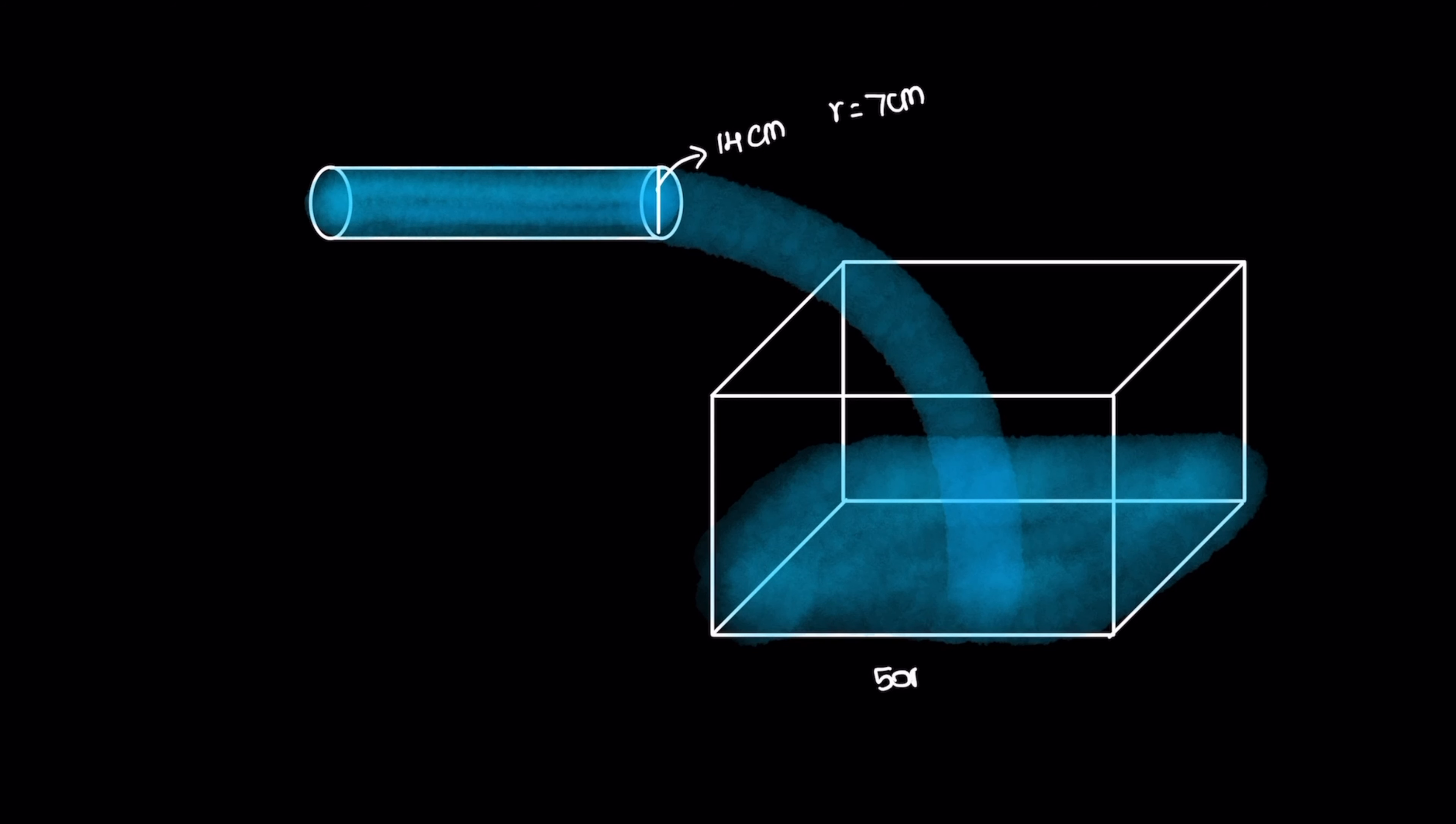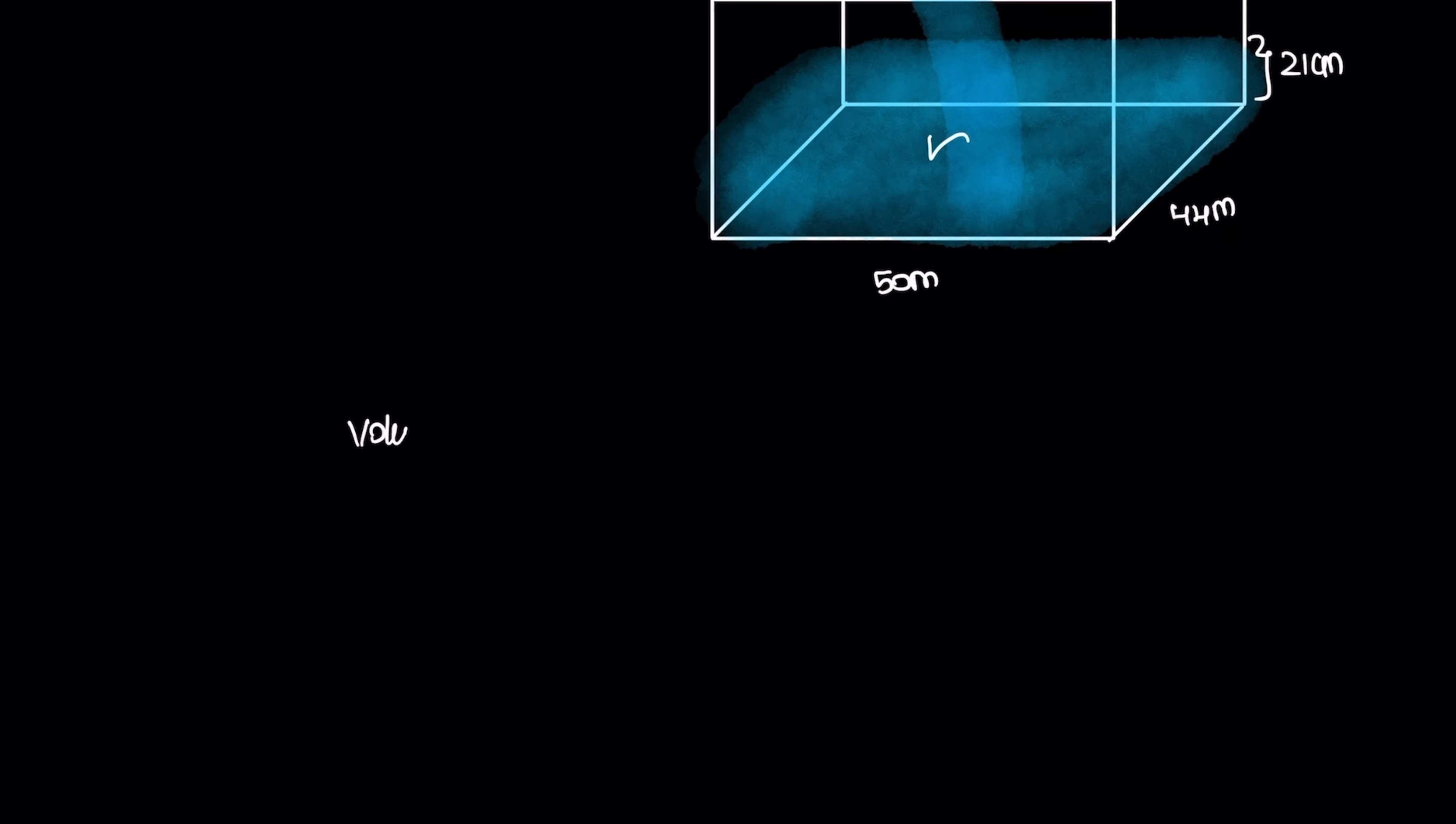The rectangular tank has length 50 m and width 44 m, but the height of the tank we need to find is how much time it takes to rise 21 cm. The volume of water is equal, so volume of cylinder is equal to volume of tank.